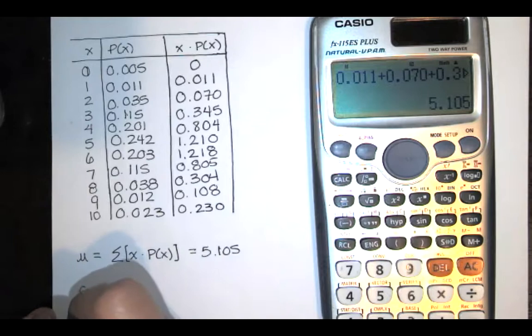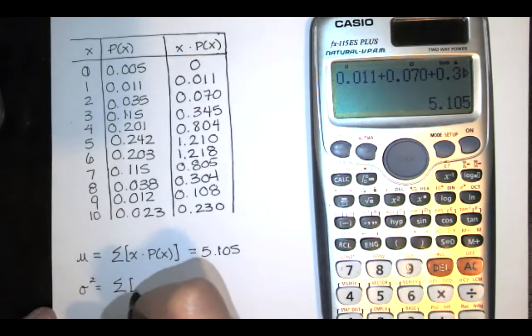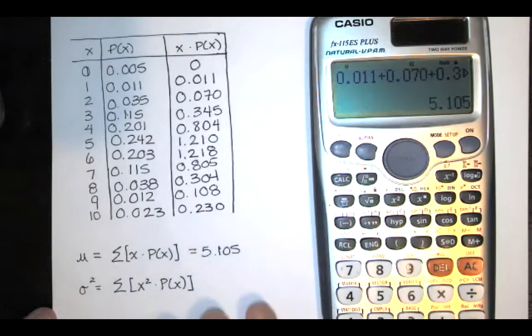And then the standard deviation can be found first by finding the variance. You take the x's squared and you multiply by the corresponding probability. And then you add those together. And then you subtract the mean squared. And then you just take the square root of that to get the standard deviation.